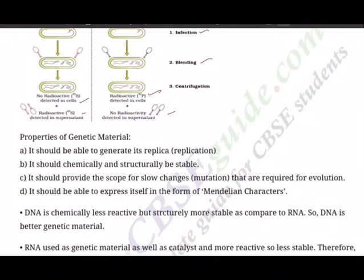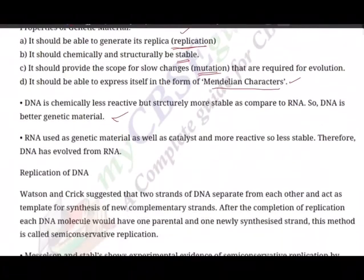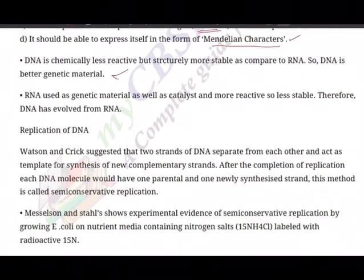The properties of genetic material: it should be able to generate its replica (replication); it should be chemically and structurally stable; it should allow for slow changes like mutations required for evolution; and it should be able to express itself in the form of Mendelian characters. DNA is chemically less reactive but structurally more stable compared to RNA, making DNA a better genetic material. RNA is used as both genetic material and catalyst, being more reactive and less stable. Therefore, DNA is thought to have evolved from RNA.